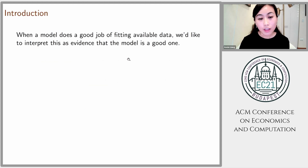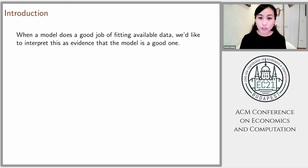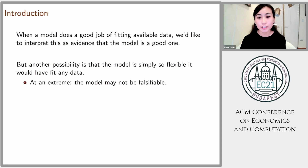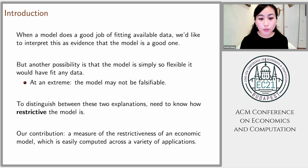This is joint work with Drew Futterberg and Wayne Gow. The question we confront is the following: suppose you have a model you're interested in testing, you've gone out and collected data, and you find that your model does a great job of predicting that data. That's suggestive that you've got a good model, but another possibility is that your model is simply so flexible it would have fit essentially any data set quite well. At an extreme, it may not even be falsifiable. So it's important to separate these two possible explanations, but to do that we need to have some understanding of how restrictive your model actually is, which is often not apparent from the formal description of the model itself.